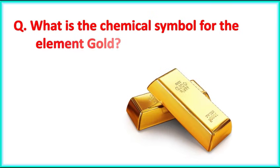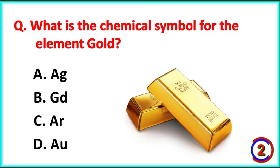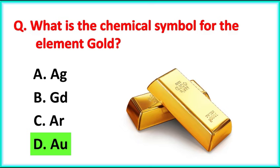What is the chemical symbol for the element gold? The correct answer is Option D. AU.